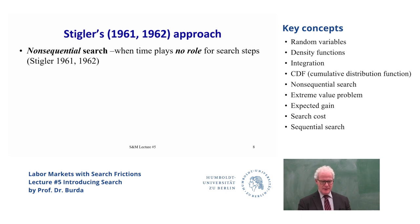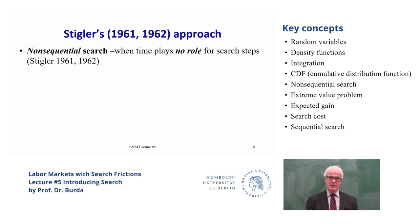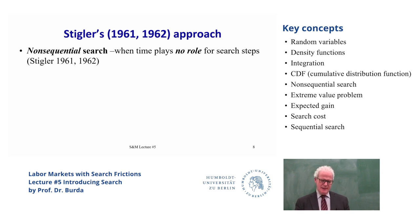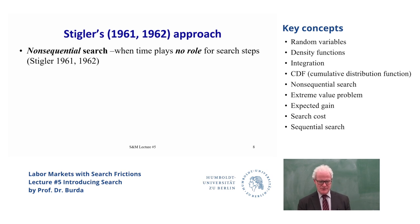So it's not exactly what we think about when we think about search — that's why this theory was criticized. You write down the number of stands you're going to visit and then you do it either simultaneously or run through the stands with recall: you can go back and say, I got a really low price at the first stand, I can return for it. We call this non-sequential search to rule out discussion of that issue, but that's going to be the most important issue in the end.